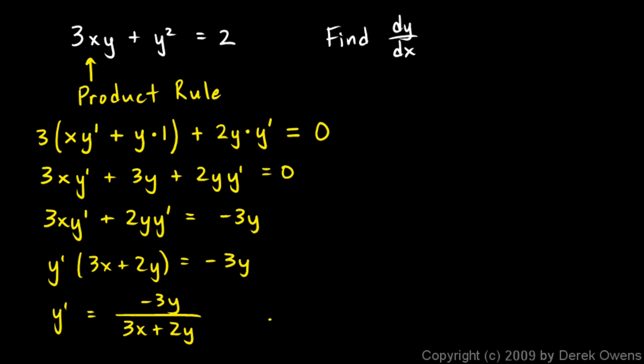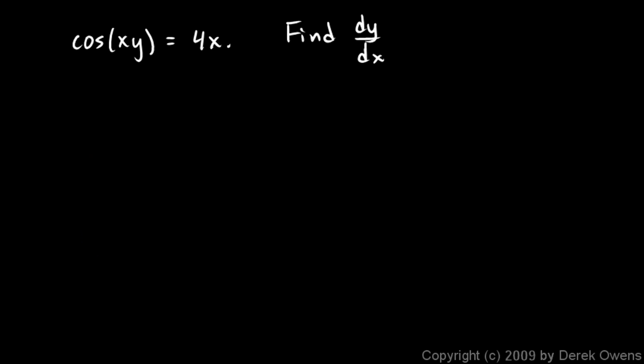So y prime is negative 3y over (3x plus 2y). And we're done — that's the derivative of y with respect to x. Here's our next example: the cosine of x times y equals 4x. Find the derivative of y with respect to x.